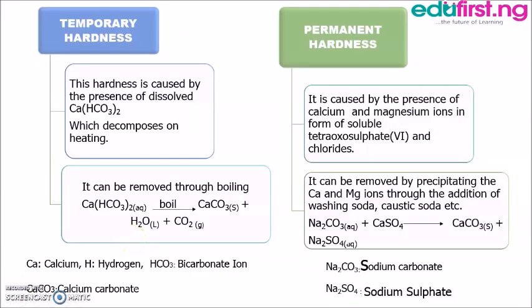Temporary hardness of water is caused by the presence of calcium hydrogen carbonate, Ca(HCO₃)₂, which decomposes on heating. It can be removed through boiling. When we boil calcium hydrogen carbonate, it gives us calcium carbonate, which precipitates and removes the calcium ion that was making the water hard. So boiling removes the calcium ion by precipitating it as calcium carbonate, along with water and carbon dioxide.